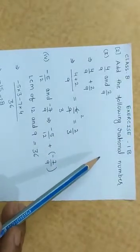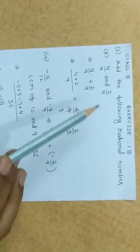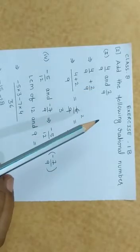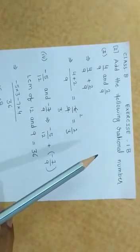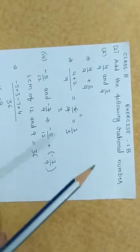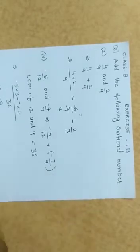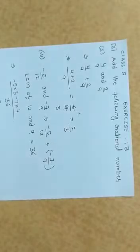Now friends, we start Exercise 1b of rational numbers. In the previous chapter we discussed about rational numbers and changing rational numbers into like fractions and arranging these fraction numbers in order of ascending or descending order.